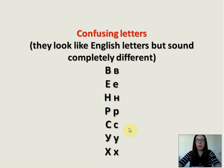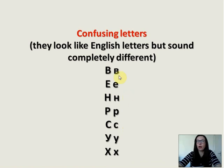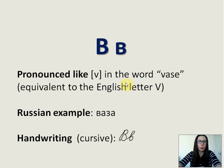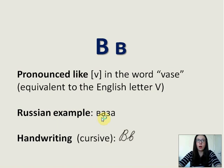Now we will learn the confusing letters. They are confusing because they look like English letters but sound completely different: В, Е, Н, Р, С, У, Х. They look exactly like English letters but give different sounds. Let's start — В is pronounced like V in the word 'vase.' It is equivalent to the English letter V, but it looks like the English letter B. Russian example: 'ваза,' which means vase. And here is the cursive.